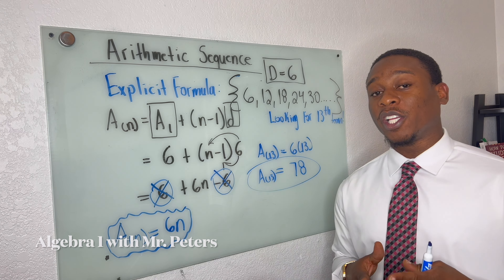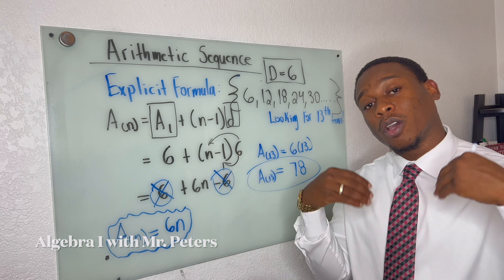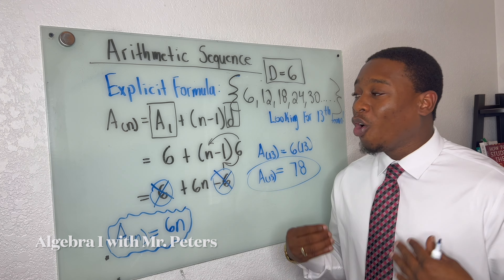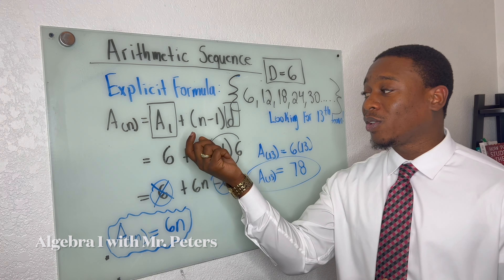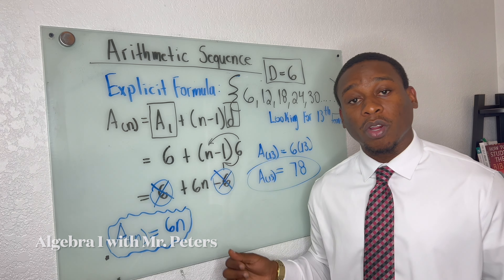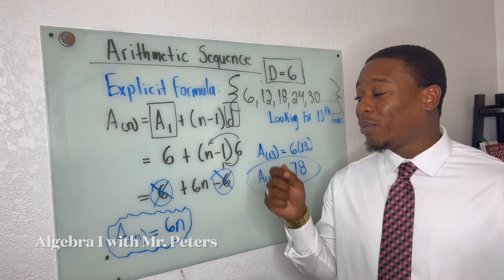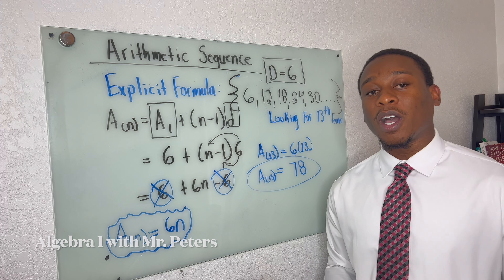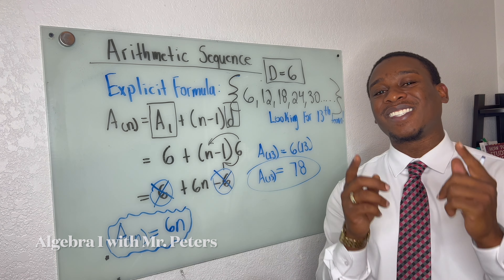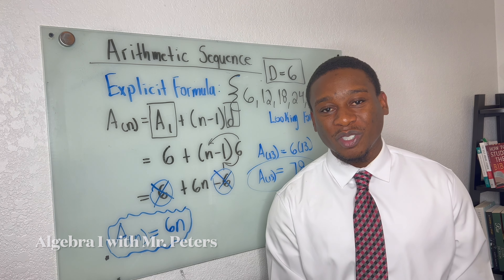When we're talking about the explicit formula, understand there are two different methods to solve. We could come up with the formula for that sequence and then substitute, or we could just use the explicit formula directly, substituting our first term, common difference, and the term number we're looking for. We hope you found this video helpful — please smash the like button, leave a comment below, and join us Wednesday for our live streaming session at 6:30 PM Eastern Standard Time. This is Professor Peters — thank you guys so much for joining me today.